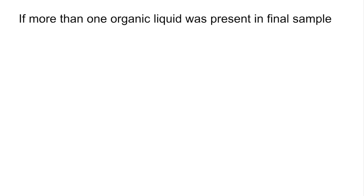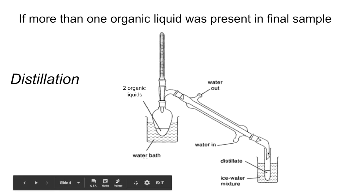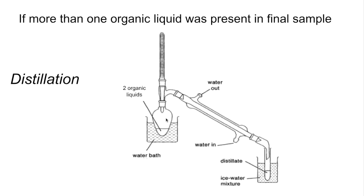For the final part of the video, consider this scenario: suppose there was more than one organic liquid present in the final sample. They're not going to separate into an aqueous layer and an organic layer because they're both organic, so we can't use the separating funnel method. Instead, we'd use distillation. You'd have your two organic liquids in the flask, heat the mixture to the lowest boiling point, and that substance would evaporate, travel down the condenser, condense, and fall into a separate collection container, while the other organic liquid would remain in the original flask.